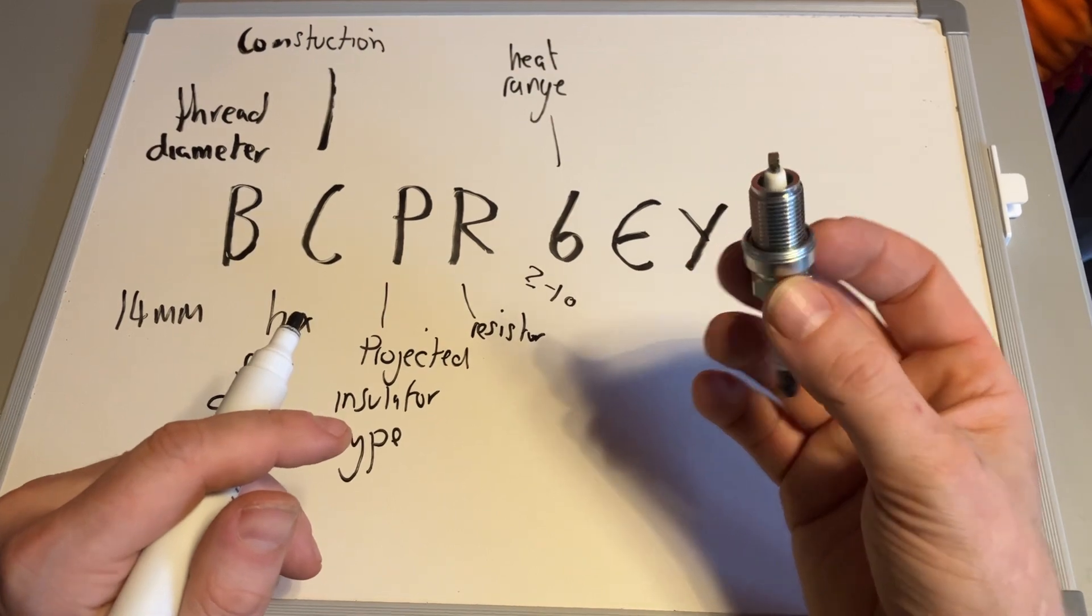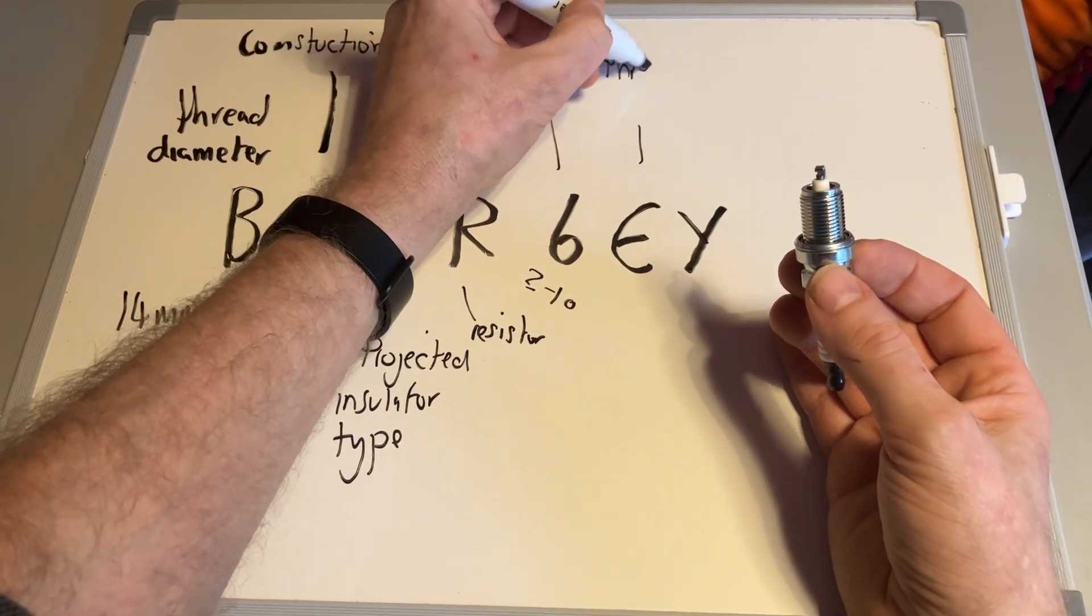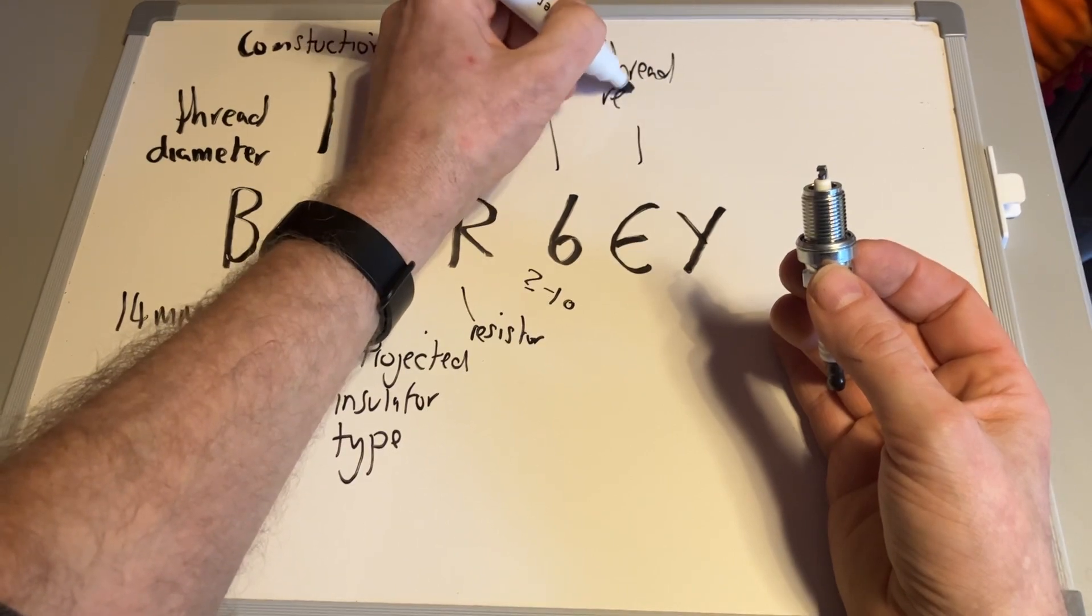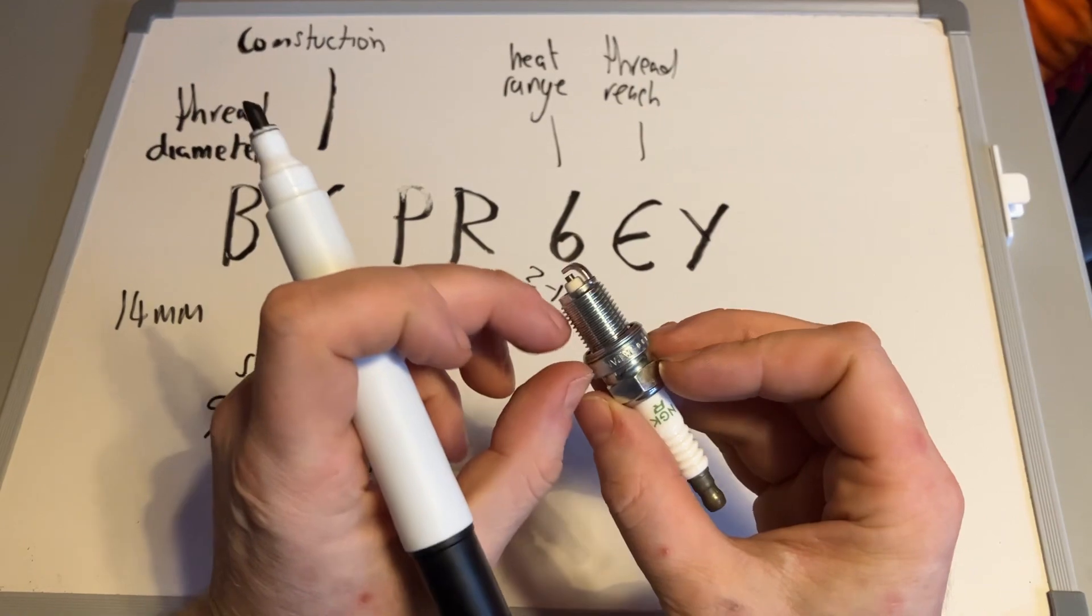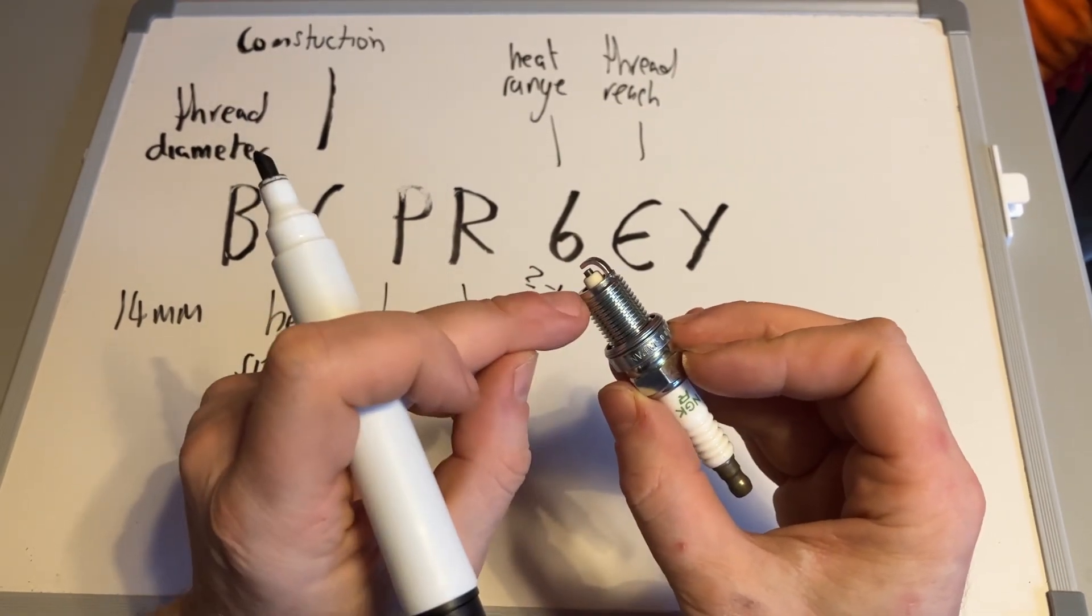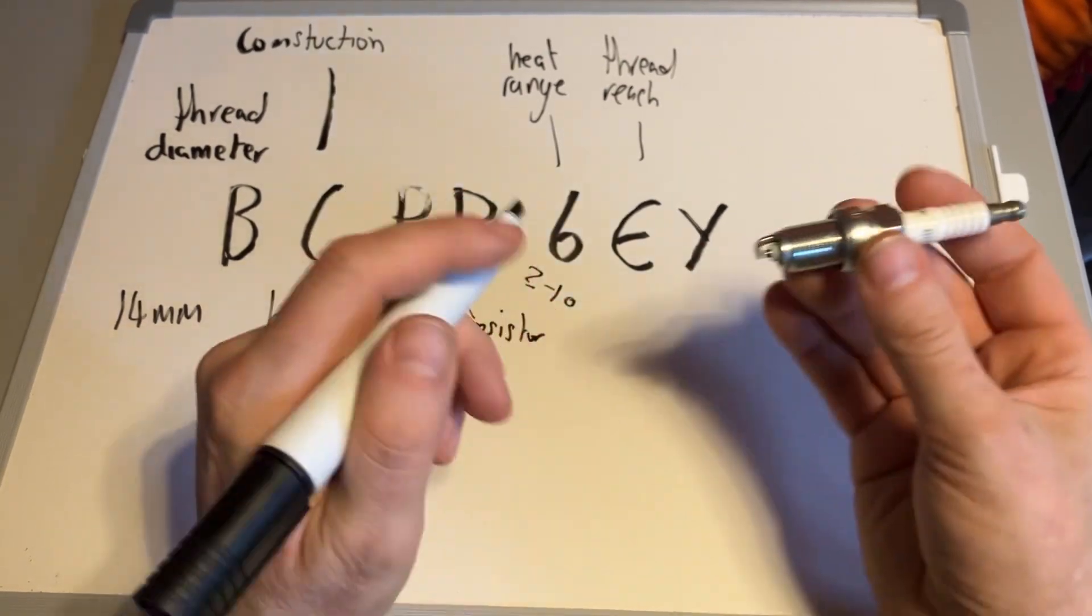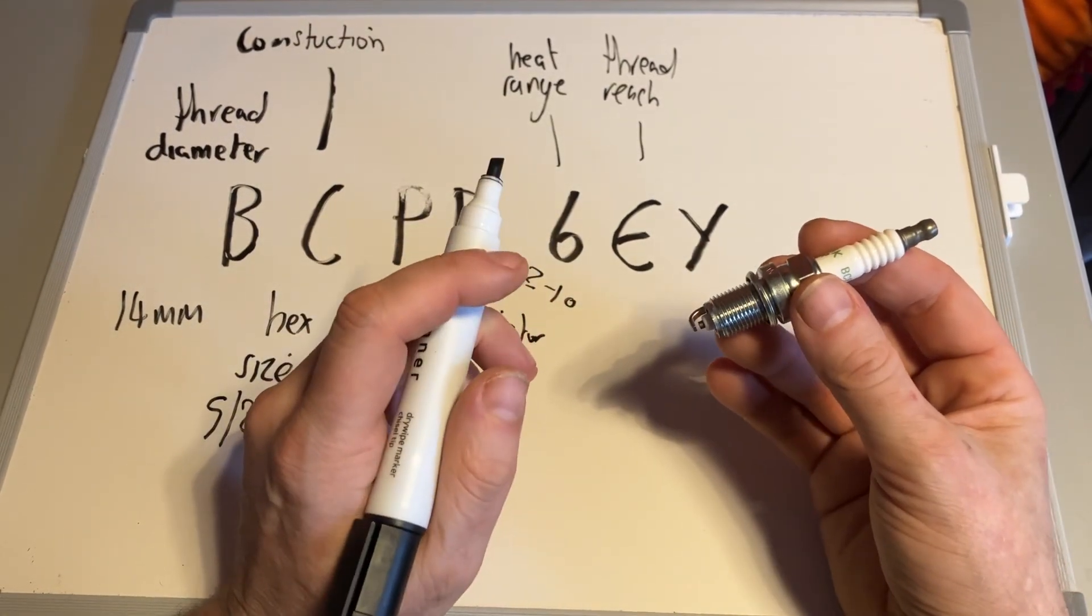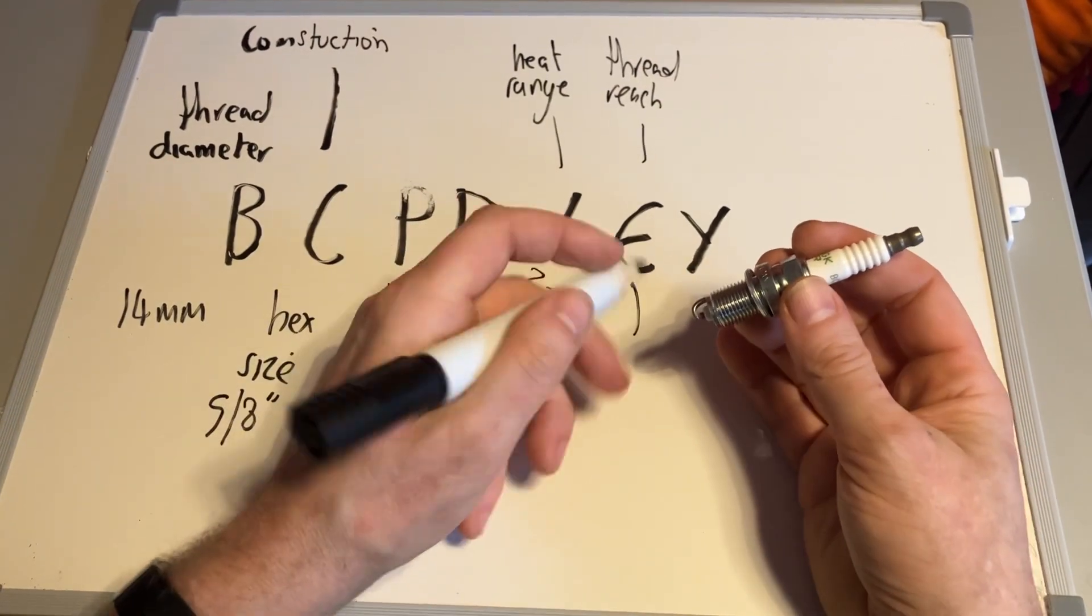E is your thread reach, and that's 19 millimeters. That's the depth here, how long that thread goes. Some will be shorter and some will be longer. The thread reach is important to make sure you get the right one for the engine to ensure it seals up the cylinder properly. In this particular case, E represents 19 millimeters when dealing with NGK.